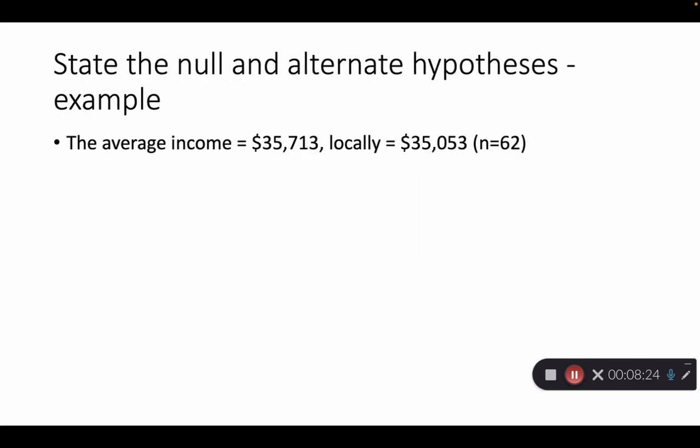Now, let's think about an example here. So if we have an average income of 35,000 and some change, and we base that on a national average, so that's our mu, that's our assumed to be true value. And then locally, we interview or we collect data from 62 individuals. And this data is actually for women with a high school diploma, but nothing further. And we find that locally that the average salary for these 62 women who have a high school diploma and nothing more is 35,053 versus the national average at 35,713.